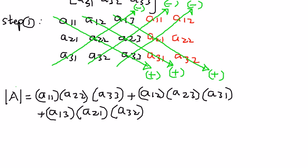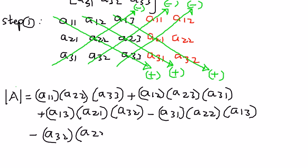We have exhausted the diagonals coming down, and then we're going to go after the elements which are connected by the diagonals going up. So minus A31 times A22 times A13, then minus A32 times A23 times A11, and then the last one is minus A33 times A21 times A12.